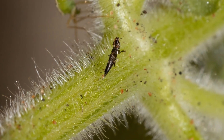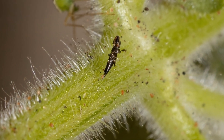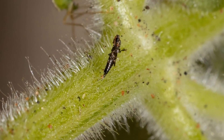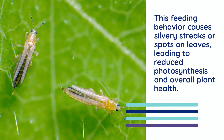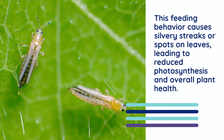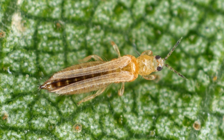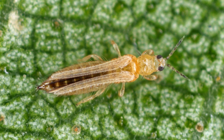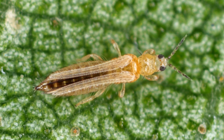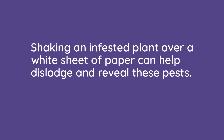Chapter 10: Thrips. Thrips are small, slender insects that feed on cannabis plants by scraping the surface of leaves and sucking out the contents. This feeding behavior causes silvery streaks or spots on leaves, leading to reduced photosynthesis and overall plant health. Identifying thrips involves inspecting leaves for silvery or bronze-colored streaks and spots. Thrips themselves are tiny and can be yellow, brown, or black. Shaking an infested plant over a white sheet of paper can help dislodge and reveal these pests.